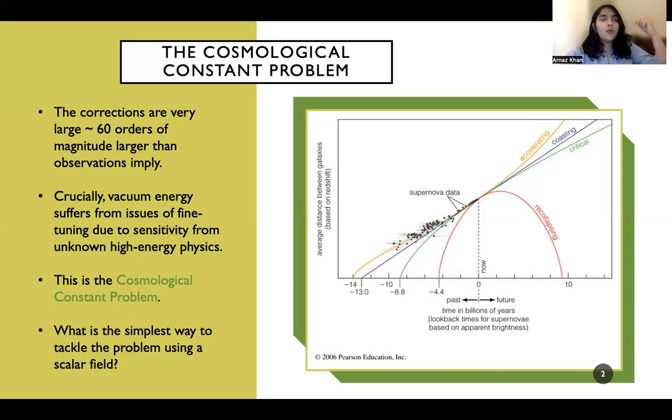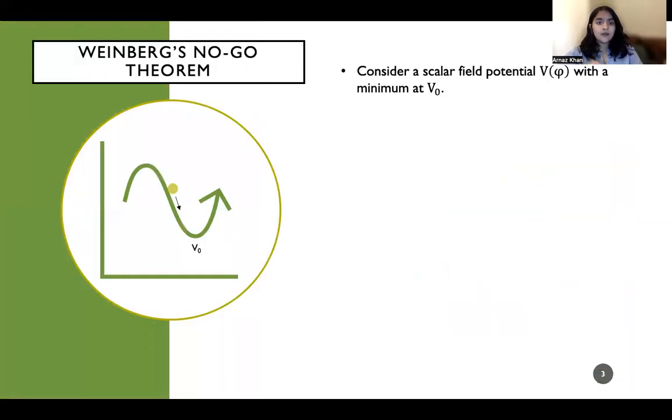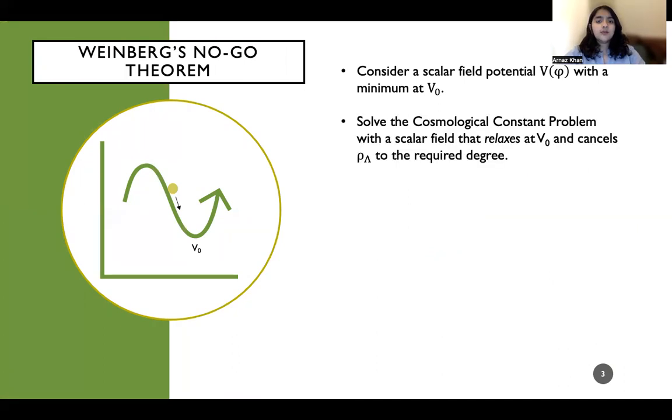So before that, what would be the simplest way to tackle the problem? Let's consider this. Think about a potential that has a minimum at V0 and a scalar field that's rolling down and approaching V0. Now imagine that the field comes to rest at this minimum and relaxes to that value. And now you can set the value of V0 to be equal to whatever you need, such that it cancels rho-lambda to the exact required degree.